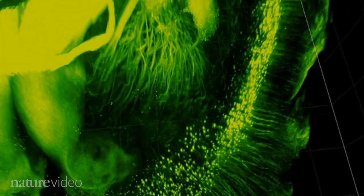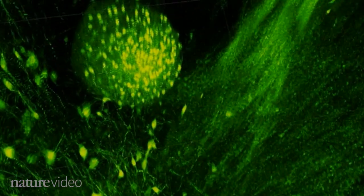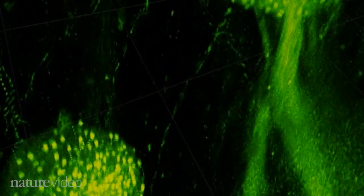Existing techniques for studying the brain's wiring are often limited to looking at very small volumes of brain, or they don't allow you to label genes or chemicals of interest. The advantage of clarity is that you can label lots of molecules in whole brains.